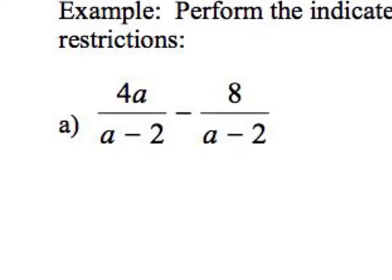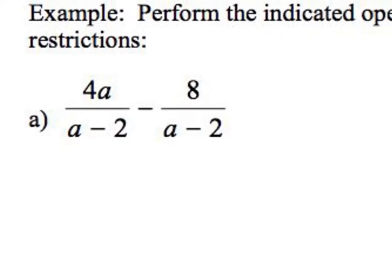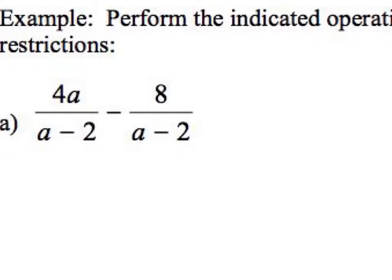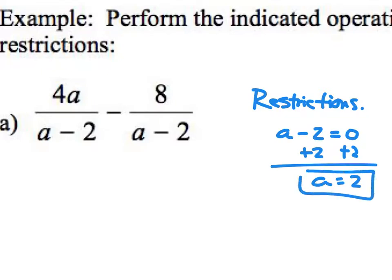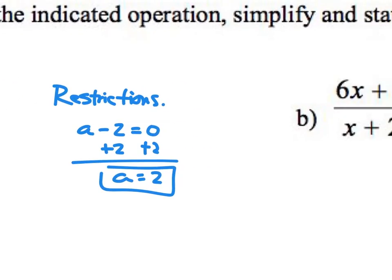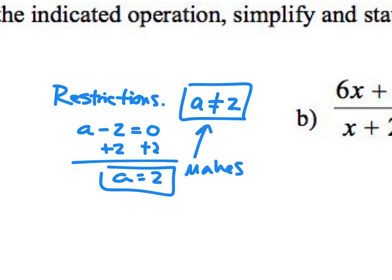Looking at this first algebraic example, I need to state any restrictions. Remember, restrictions are values that make your denominator zero. So I set a minus two equal to zero, add two to both sides, and get a equals two. My restriction is that a cannot equal two, because that makes the expression undefined.